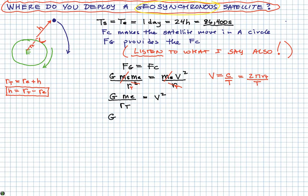Now I have to replace the v. So G M_e over r_t is equal to 2 pi r_t divided by T, and all of that gets squared. So that becomes annoying but doable. So that's 4 pi squared r_t squared over T squared.